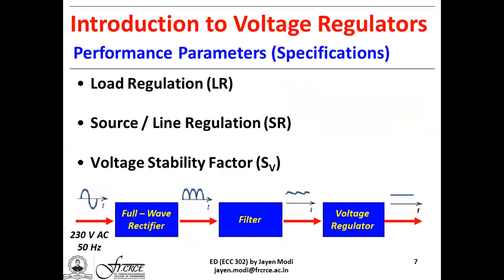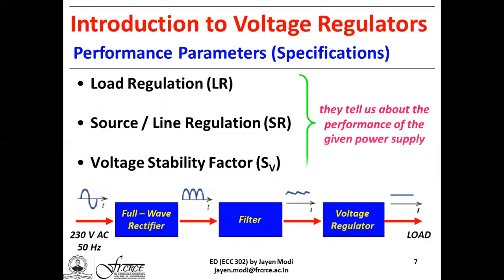The performance parameters, also called performance specifications, for voltage regulators are of three types: load regulation (LR), source or line regulation (SR), and voltage stability factor (SV). These three parameters show how good a particular power supply is and tell us a lot about its performance. Our syllabus focuses only on two main points: load regulation and source or line regulation.